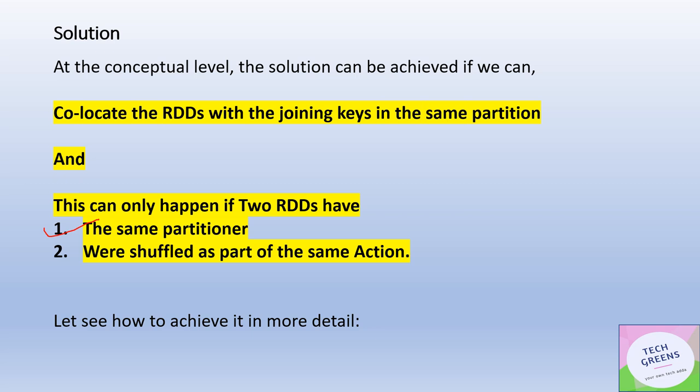The second condition is that this partitioning should be done as part of the same action — in this case, the join. So we need to design our code such that the two RDDs or DataFrames being joined are partitioned using the same algorithm. By default, Spark provides two partitioners: the hash partitioner and the range partitioner.